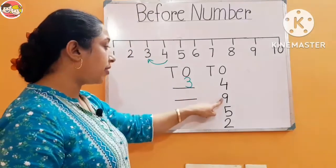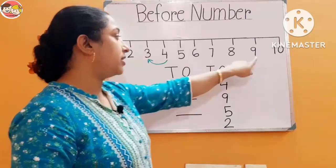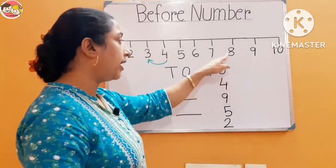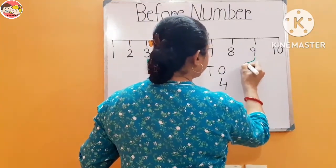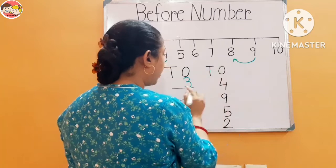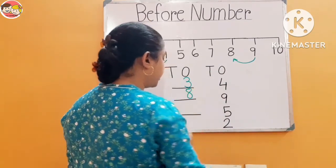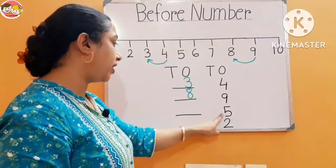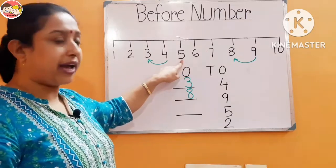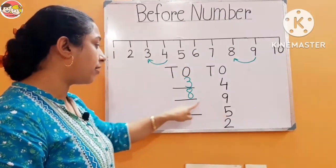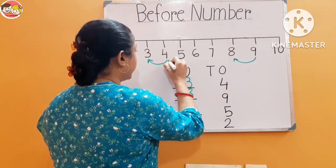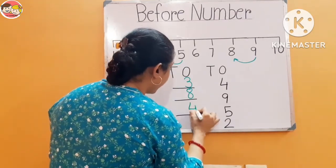Next number is 9. What comes before number 9? Number 9 se pehle — 8. Before means pehle — so what comes before number 9? 8. Here we write number 8. Next number is 5 — what comes before number 5? Number 5 se pehle — 4. So here we write number 4.